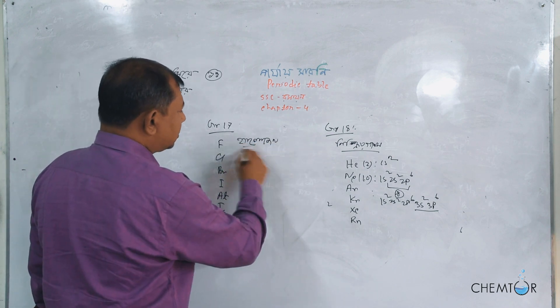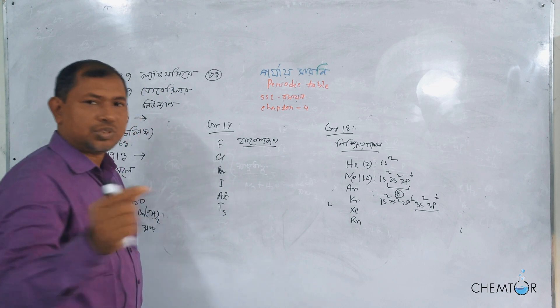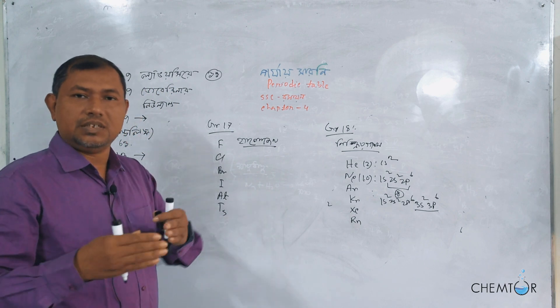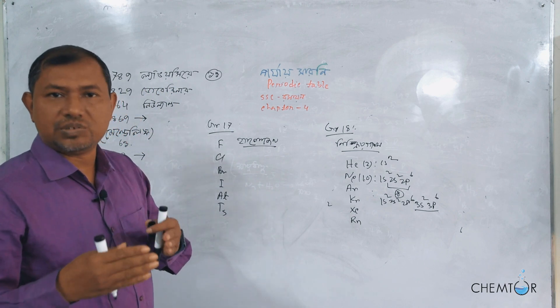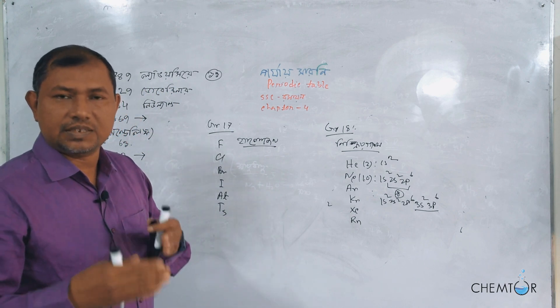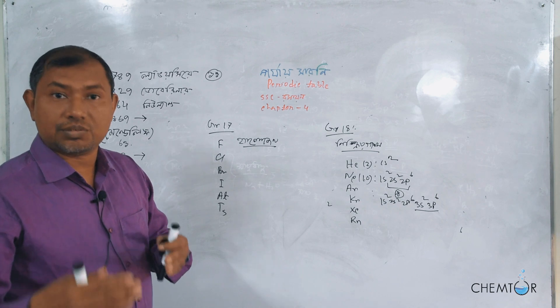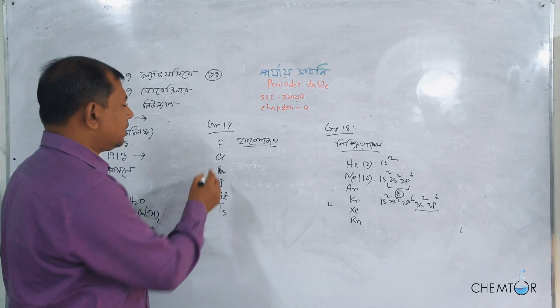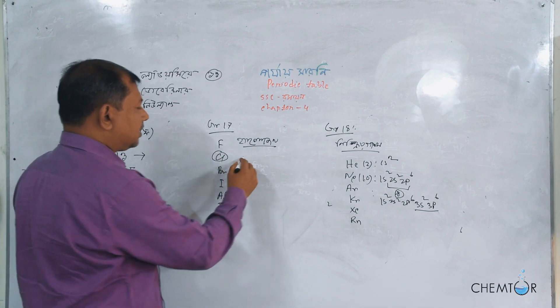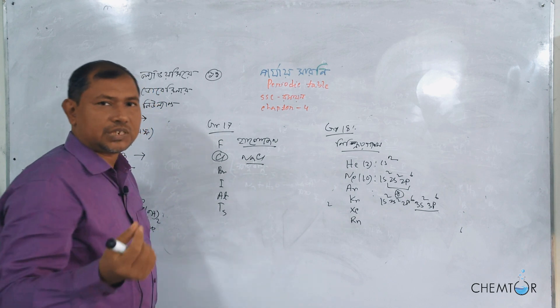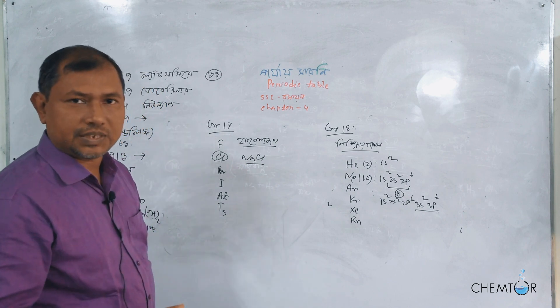This is called halogen. Halogen is the same thing, which is called sea salt producer element, sea salt maker. Here we see chlorine. Sodium chlorate is the same thing.